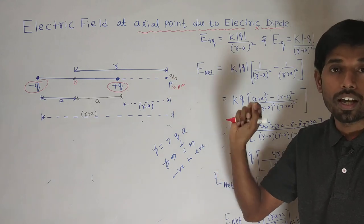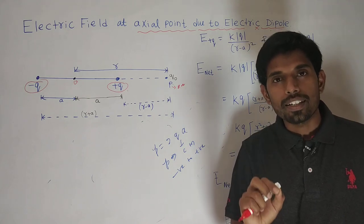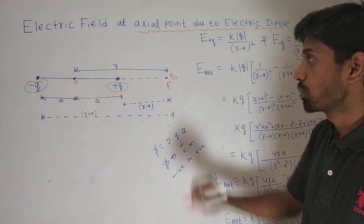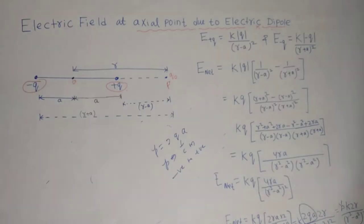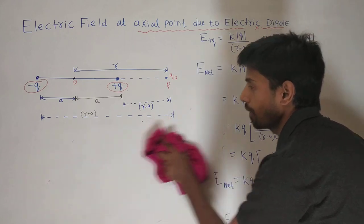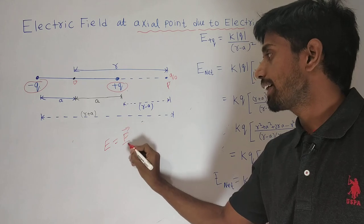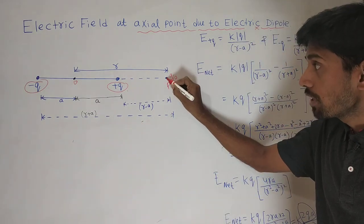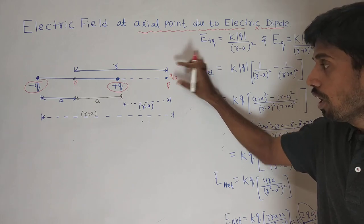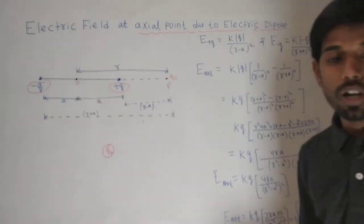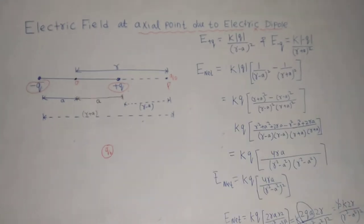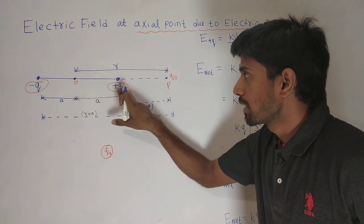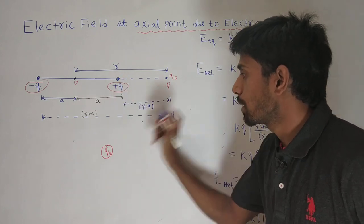Here we have to find the electric field, so wherever we need to find electric field, we place a test charge Q-naught there. At this point we place a Q-naught charge, and the formula for electric field is: electric field equals the force experienced by the test charge. So the force on Q-naught is what we consider. Now, the plus Q charge will repel Q-naught, so the electric field due to plus Q is in this direction — away from plus Q.